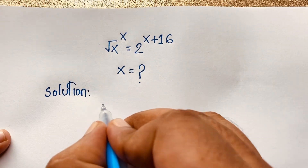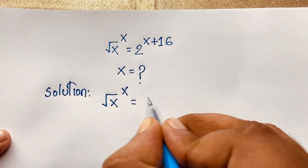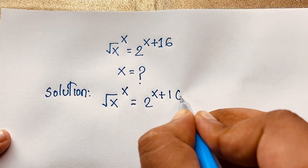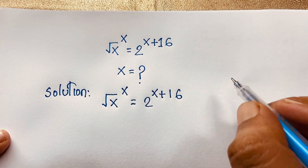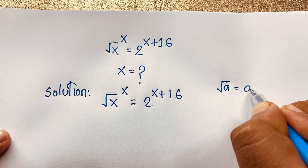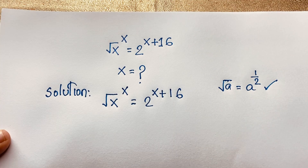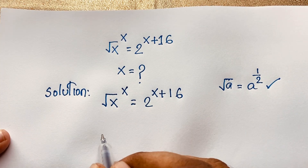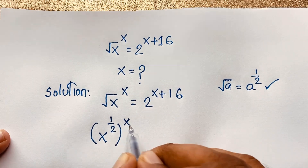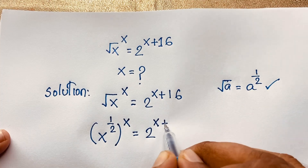Our question is: square root x, power x, is equal to 2 to the power x plus 16. We know that square root a equals a to the power 1 over 2. So if I apply this math formula here, square root x becomes x to the power 1 over 2, bracket power x, is equal to 2 to the power x plus 16.